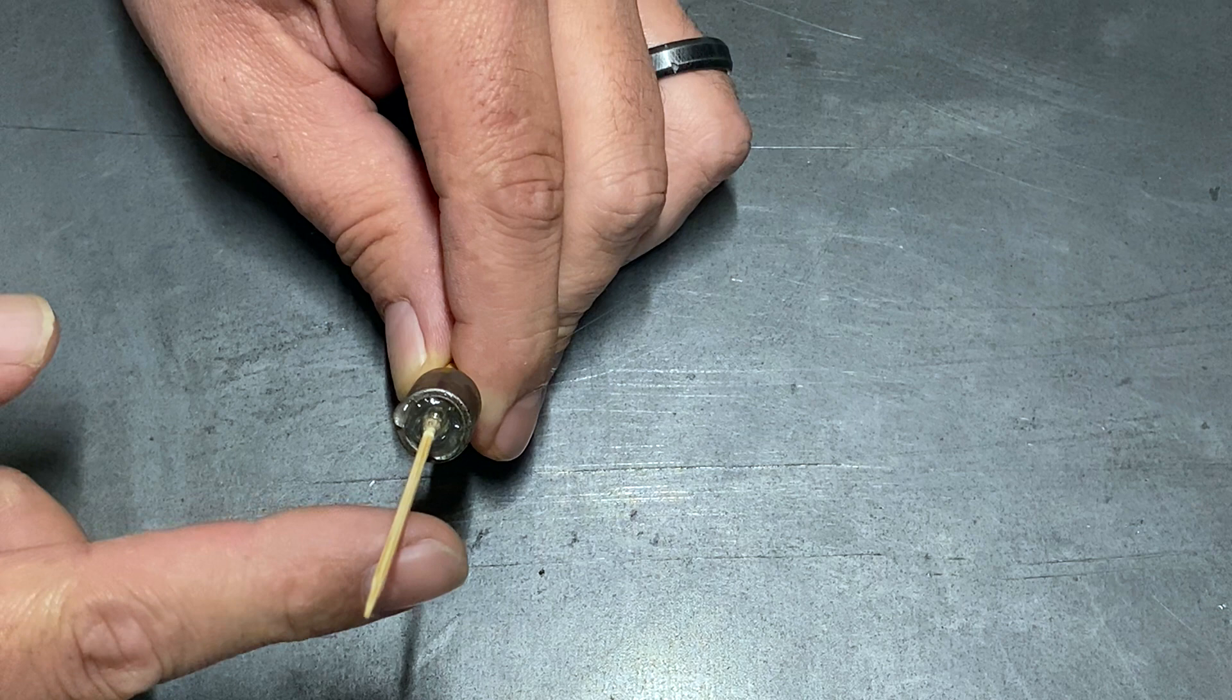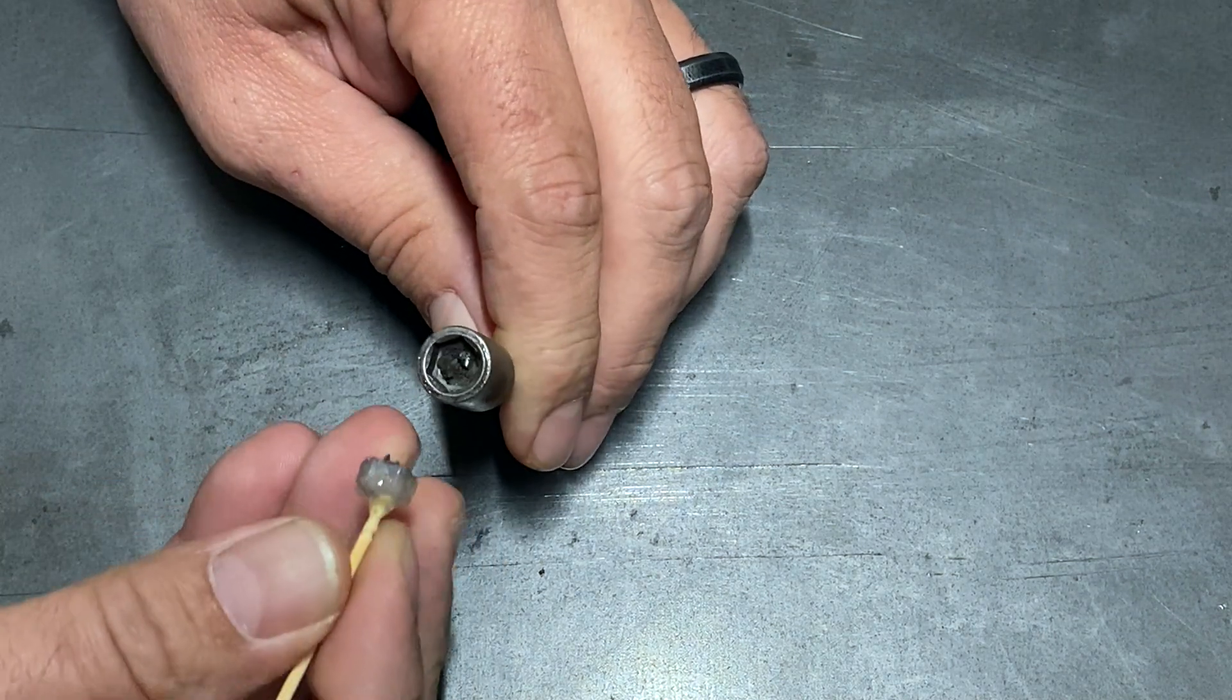And then you're going to let the glue dry. You want to give it a couple of minutes for that glue to have time to solidify. And at that point, then you can just pull out the glue with the toothpick.